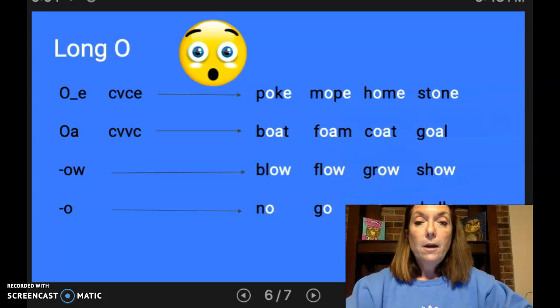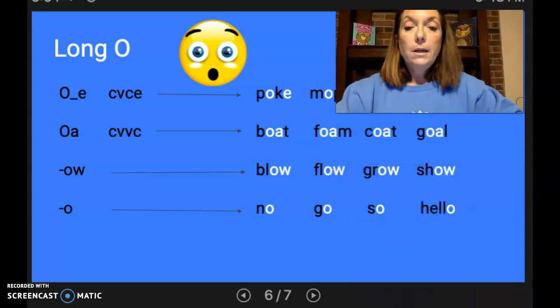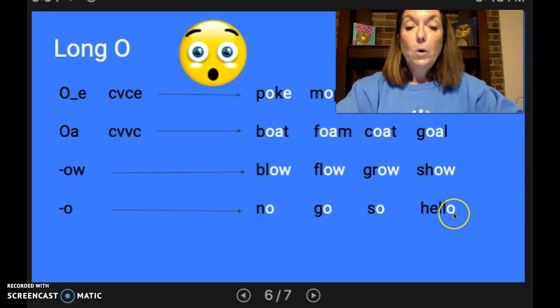And then we also have O. Again, the open syllable at the end. Just one syllable. We have no, go, so. Now here's a two-syllable word, but the E doesn't have anything to do with the O. So we have hello. So that's long O. One more left.